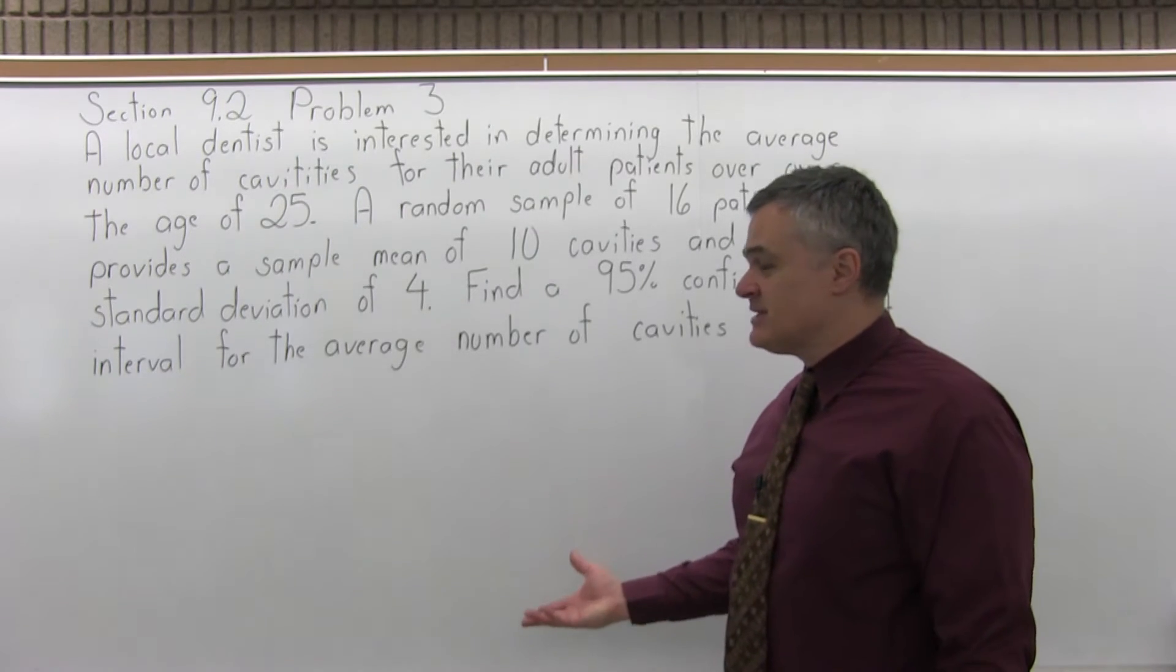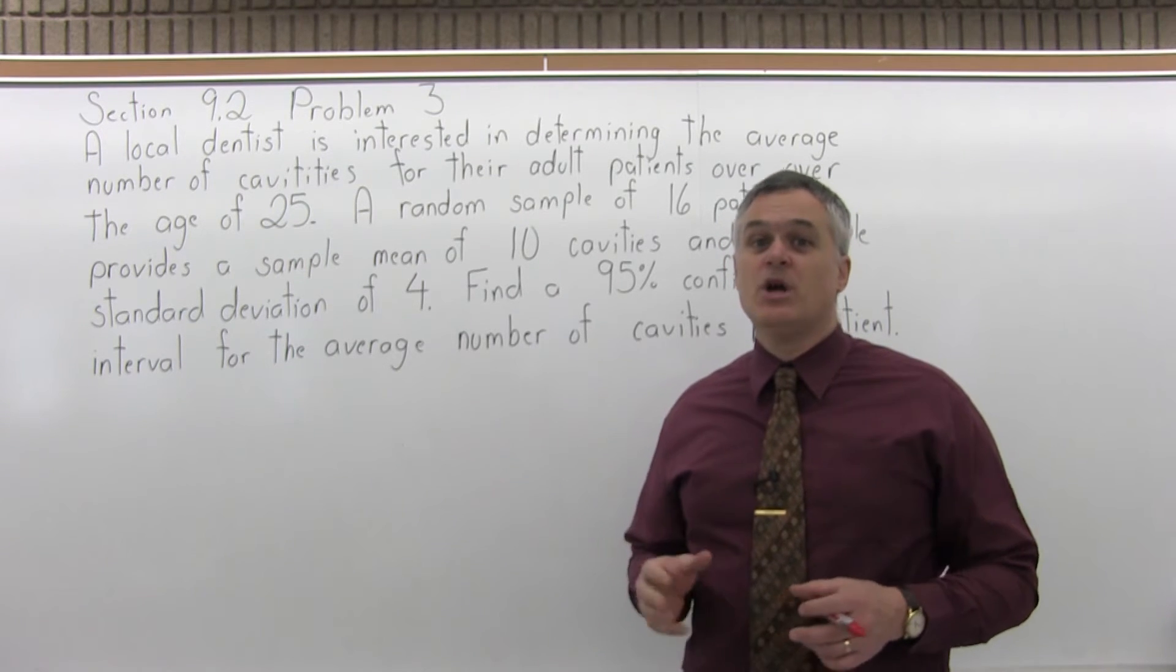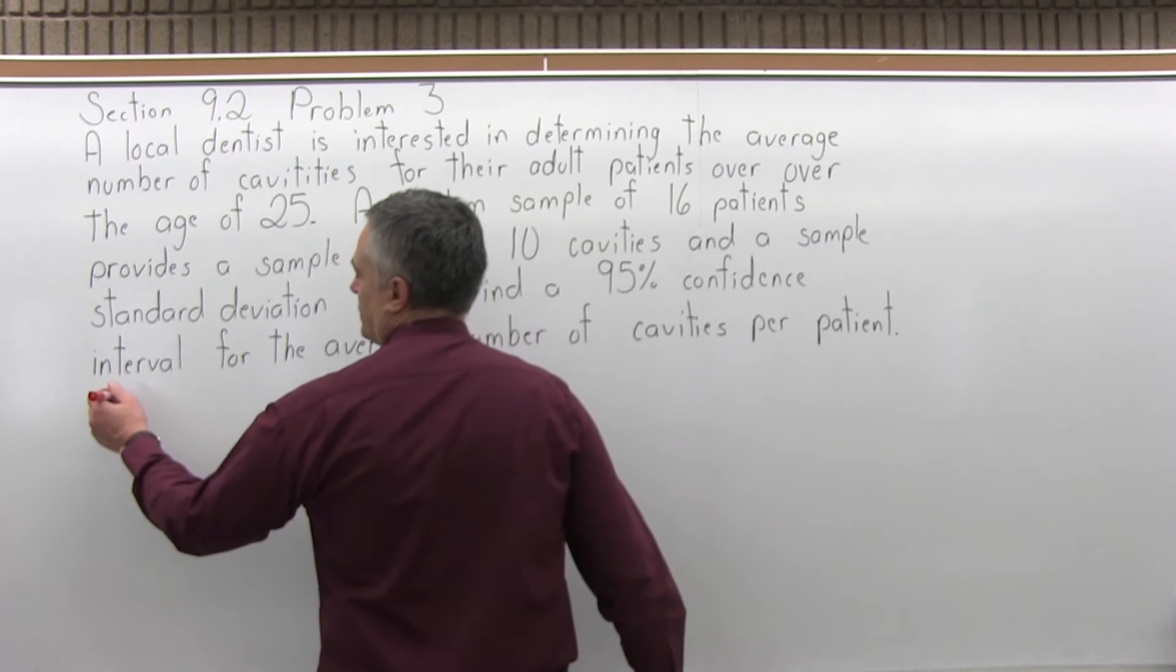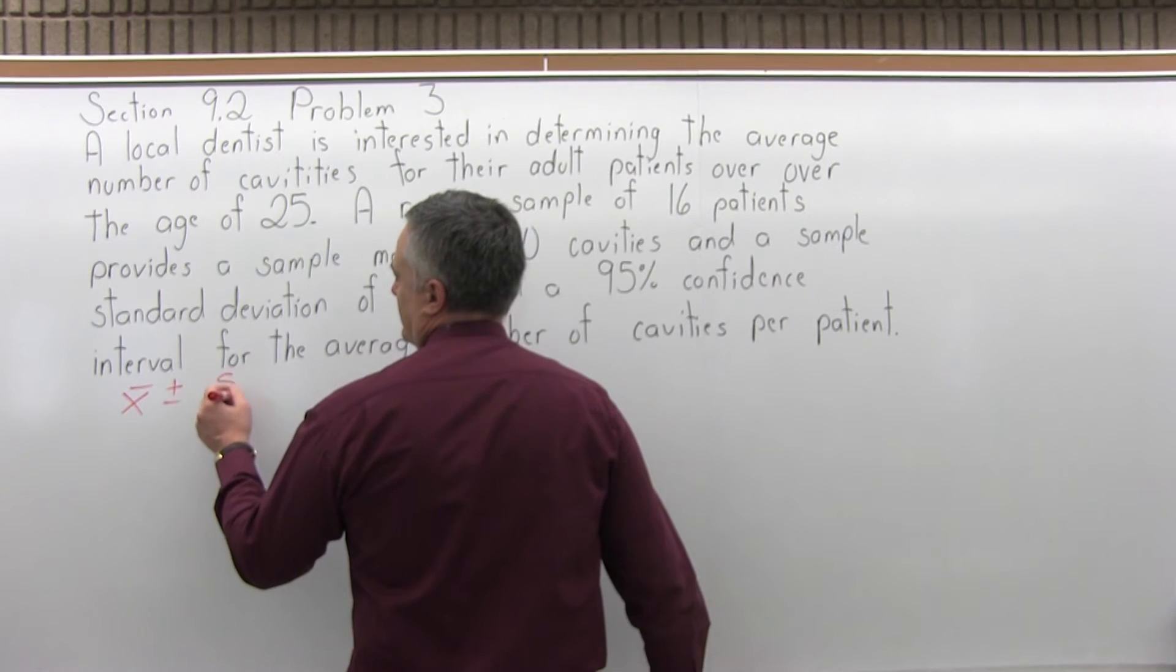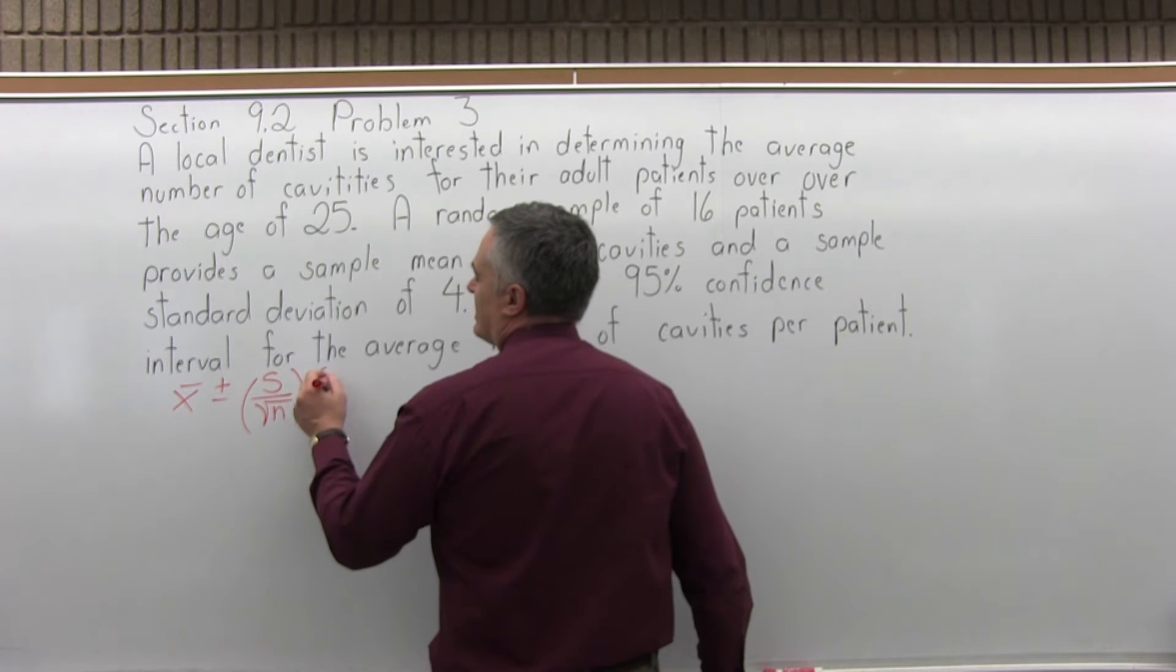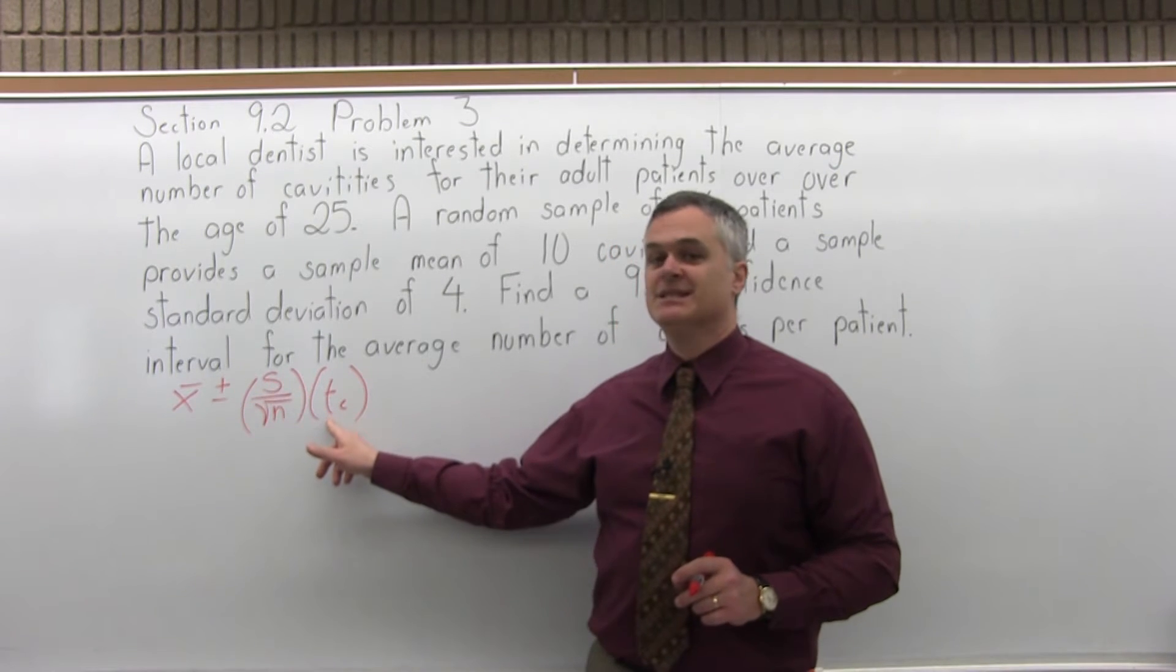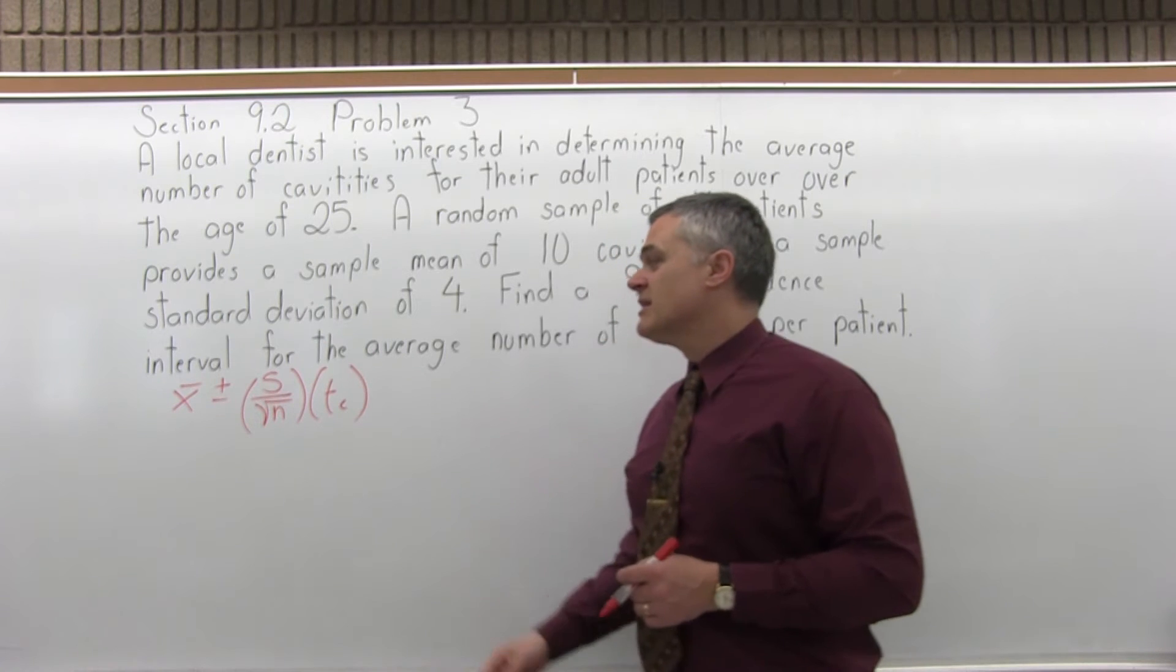So this is a confidence interval, we're going to use the confidence interval formula. We really have two confidence interval formulas, one for when you know the population standard deviation and one for when you do not. We know the standard deviation of the sample. So we have to use the confidence interval formula that is x̄ plus or minus s, the sample standard deviation, over the square root of n, the size of the sample, times t sub c for the confidence coefficient. The other formula has sigma, the Greek letter for the population standard deviation, and it's z sub c if we know the population standard deviation. Here we do not, and that's a more realistic case.